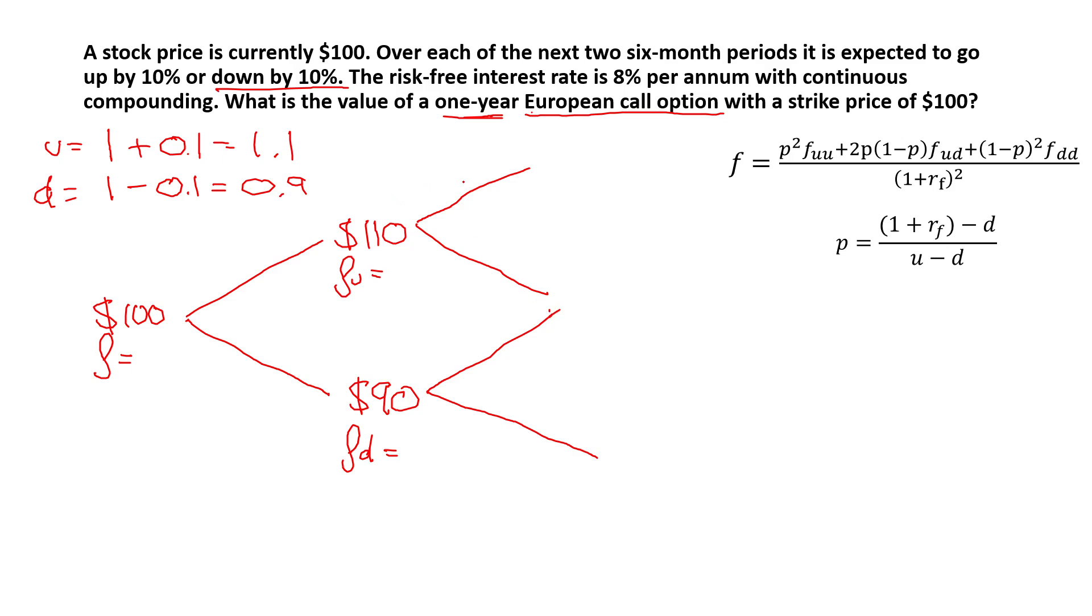Now, again, we do the same process. In order to find the share price, we do 110 times U when it goes up. So 110 times 1.1. In this case, it's 121. When it goes down, so 110 times 0.9, this gives us 99. Now, as you can see here, both these lines meet. Therefore, this means you can get the same answer whether you do 110 times 0.9, because it goes down, or whether you do 90 times 1.1, which is when it goes up. Finally, the last share price would be 90 times 0.9. And this gives us 81.